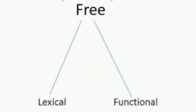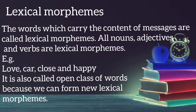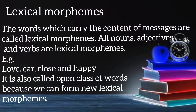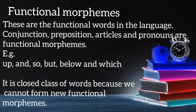Free morphemes are further divided into lexical and functional morphemes. Lexical morphemes are those which carry the content of messages; all nouns, adjectives, and verbs are called lexical morphemes. For example, the words 'love', 'car', 'close', and 'happy'. It is also called an open class of words because we can form new lexical morphemes from these words.